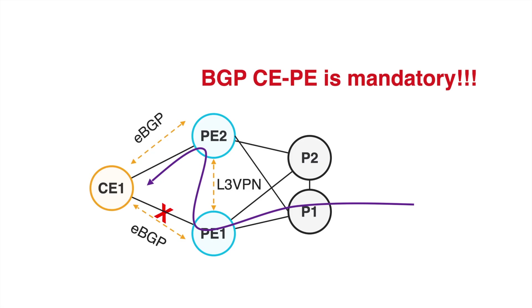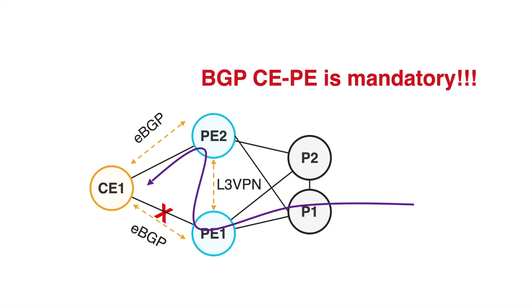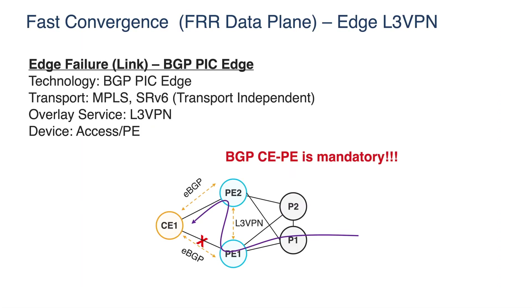Let me quickly remind how this works. When I have a CE connected to PE1 and PE2, using EBGP between CE1 and PE1 and PE2, PE1 will pre-program the backup next-hop over PE2. So when the failure between CE1 and PE1 happens, before the remote end realizes the failure, it will still forward to PE1. But PE1 will use the backup next-hop, which is pre-programmed in hardware, and forward over PE2 to CE1. This gives sub-optimal forwarding for a certain amount of time, but you are not blackholing the traffic.